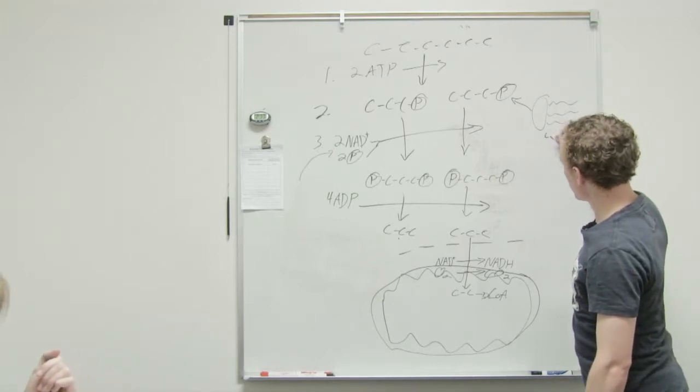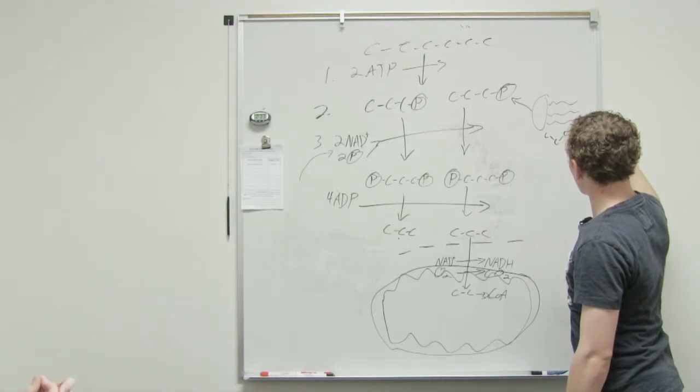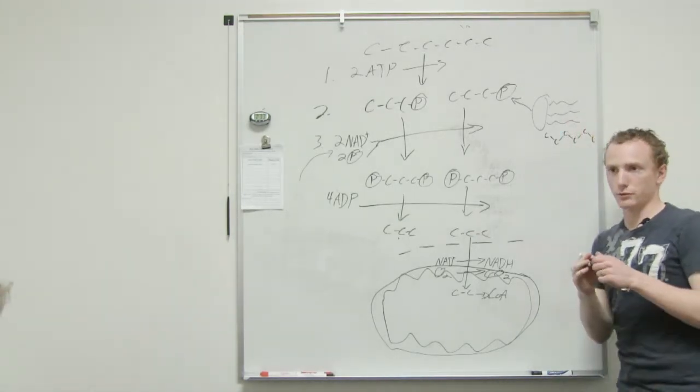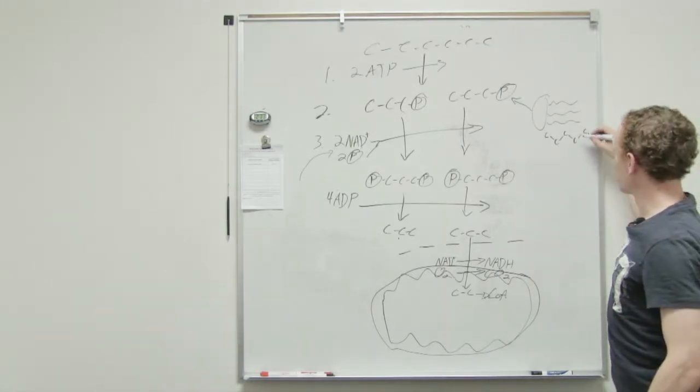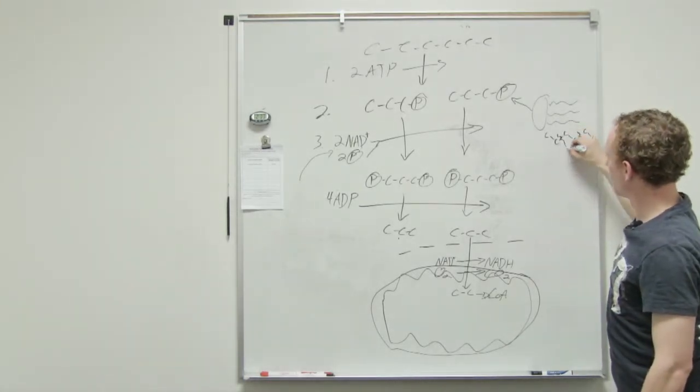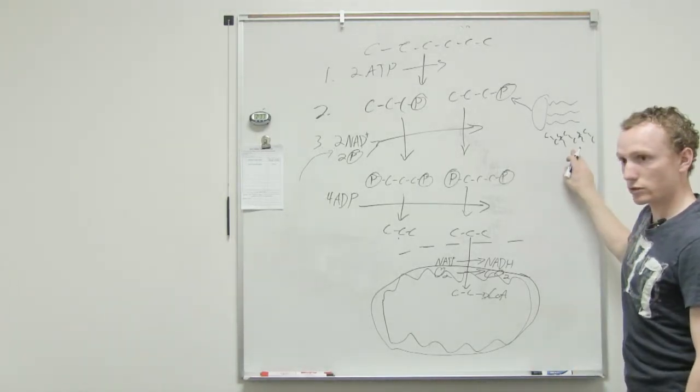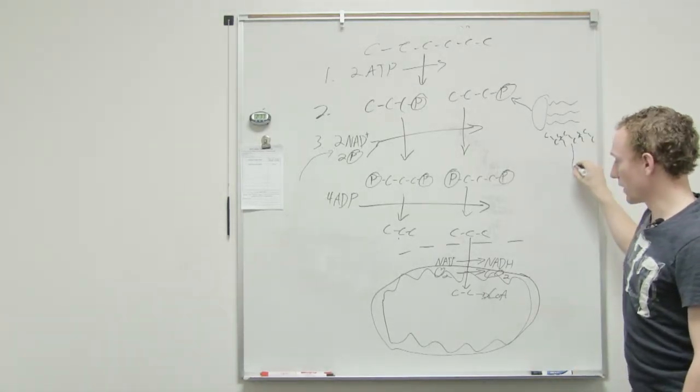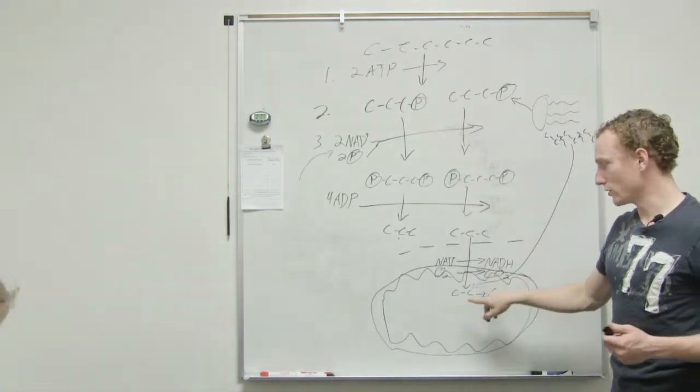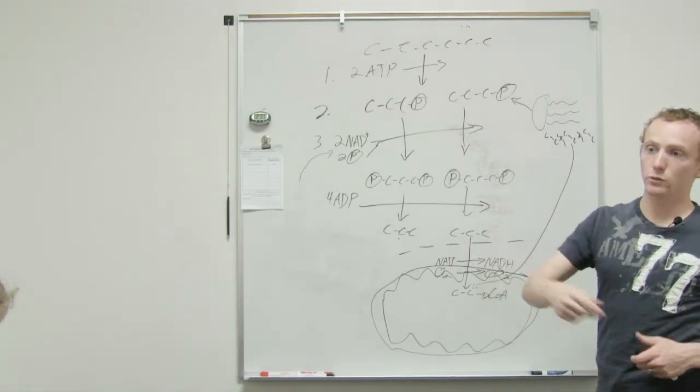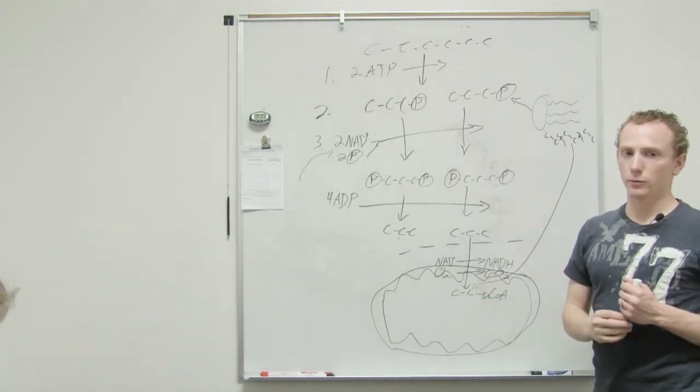So these fatty acid chains, you learned about earlier, are made of a bunch of carbons. So an enzyme goes through and breaks them apart, every two carbons, creating acetyl groups, which then can go down right there, attached to CoA, and then you have acetyl CoA, which will attach to oxaloacetate.